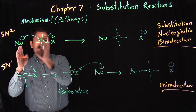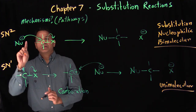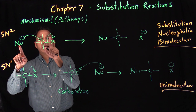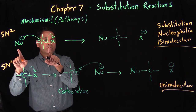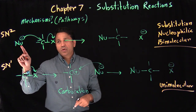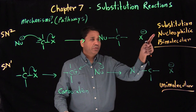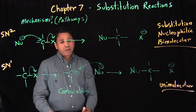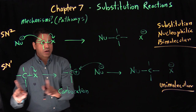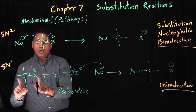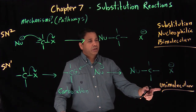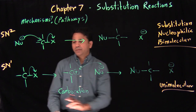In SN2, the nucleophile and the alkyl halide are both involved in step one — two molecules — so it's bimolecular. In SN1, only one molecule (the electrophile/alkyl halide) is involved in step one — the leaving group just leaves — so it's unimolecular, meaning one molecule plays the role.